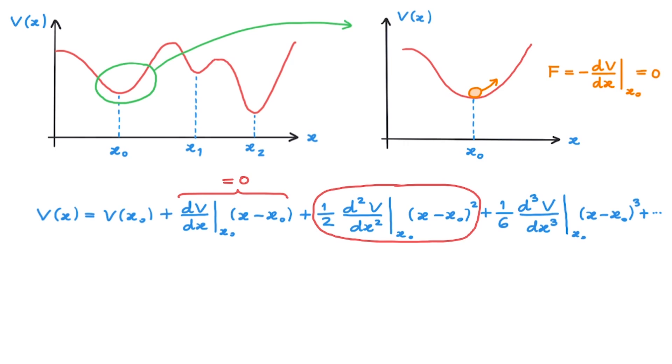What we can therefore do to describe the motion per particle near the minimum is to discard all higher order terms and only retain the quadratic term. This is of course an approximation and we should always check its validity.